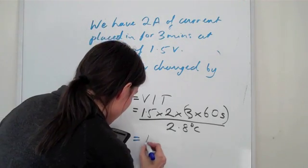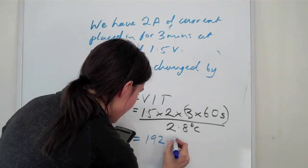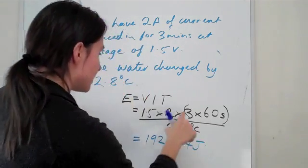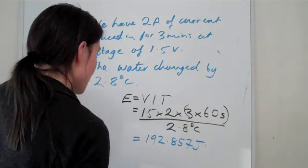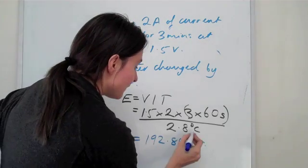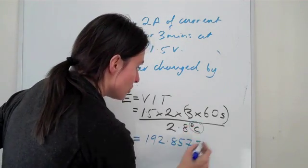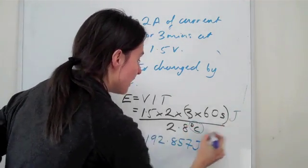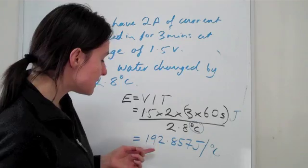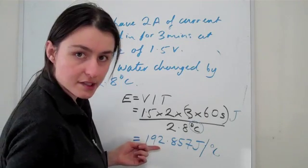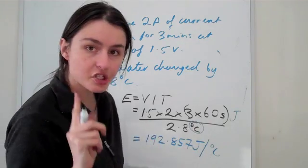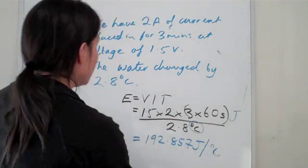What I end up getting is 192.857 joules. Remember joules because this top thing is in joules. So that's how much joules we have per degree. So what this means is that you need to deliver 192 joules into this calorimeter in order to raise the temperature by one degree.